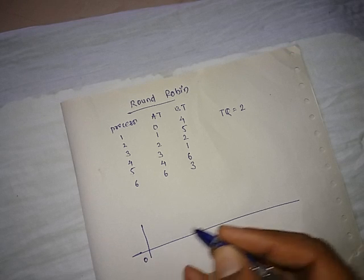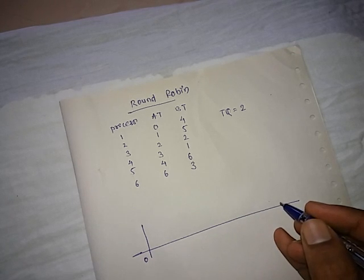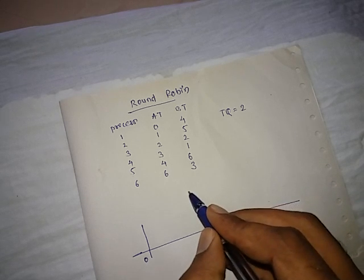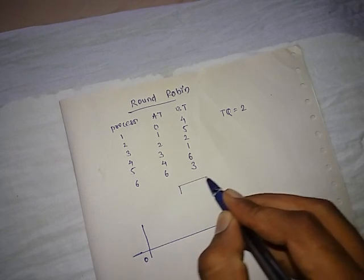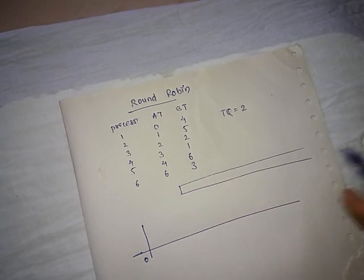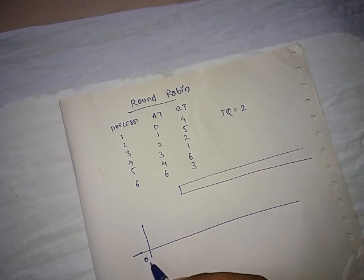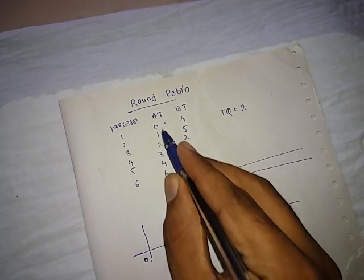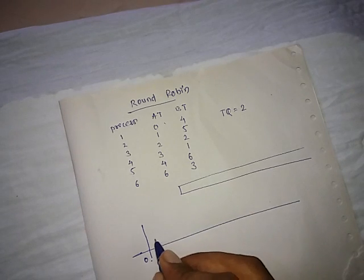The Gantt chart starts from 0. This may look simple but it's not very simple, so you have to be attentive. You have to maintain a queue for Round Robin fashion. Start from 0 and check for the time interval of 0. Is there any process? Yes, there is a process P1.